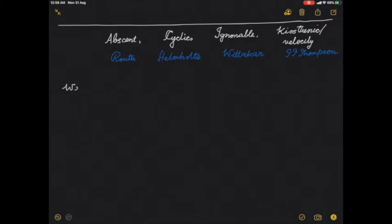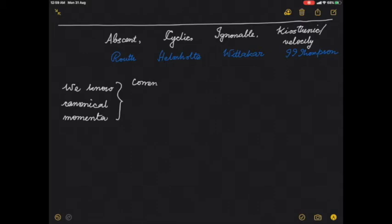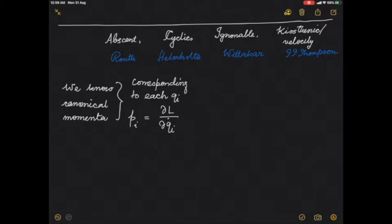We have talked about canonical momenta. What is the canonical momenta corresponding to each coordinate q_i? The corresponding canonical momenta p_i is defined as ∂L/∂q̇_i. Lagrangian is a function of n q_i's, n q̇_i's, and time.